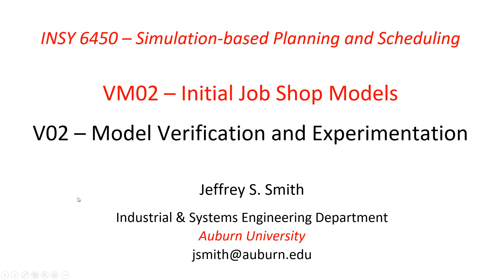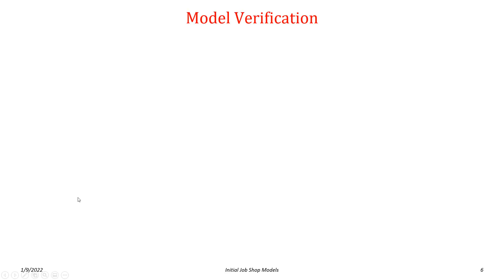Verification is part of verification and validation — two separate but related processes associated with model correctness. The verification half is ensuring the model does what you expect it to do, or does as you've designed it to do.